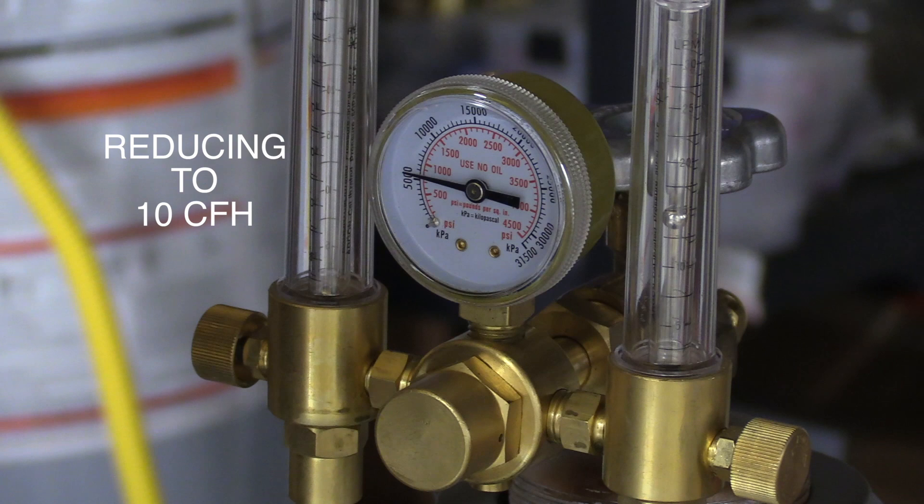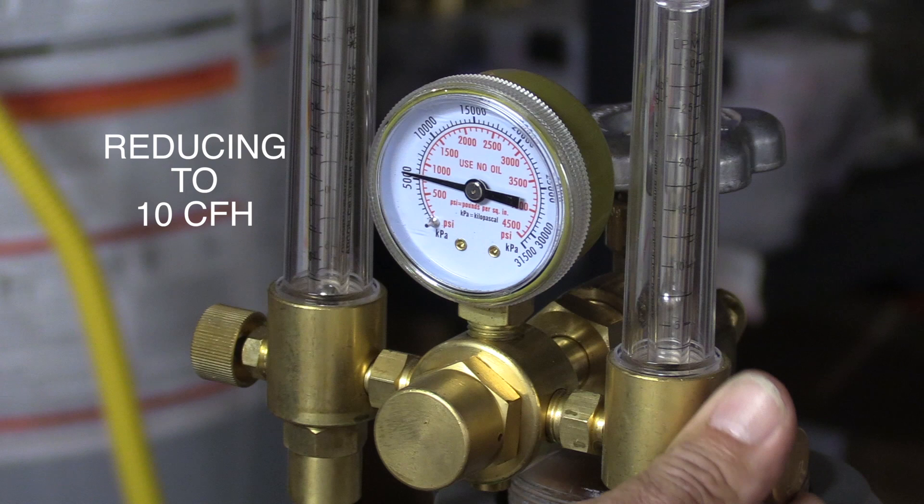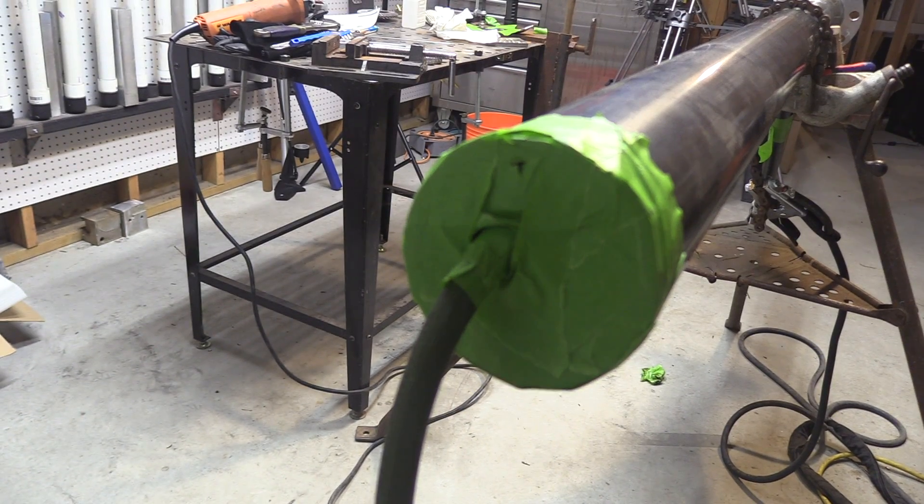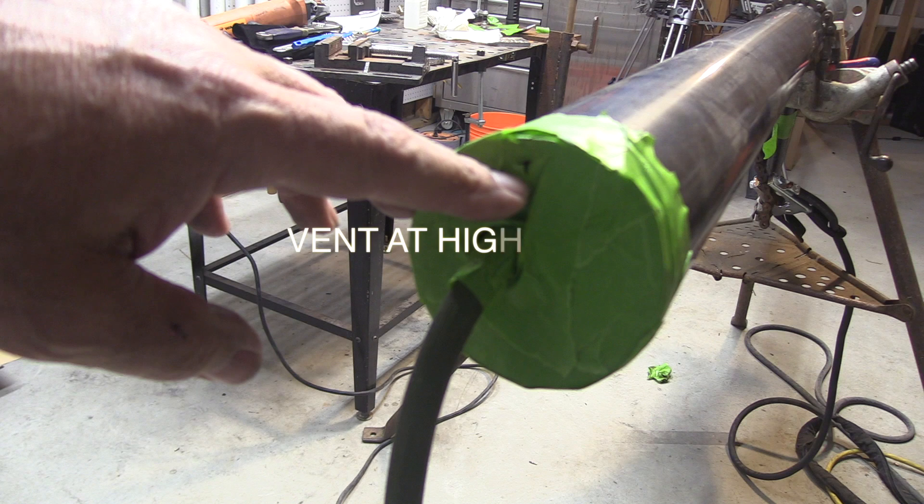Now that I'm ready to close this thing up, this is the last little one-inch section. I'm reducing my flow to about 10 CFH. And I've got to make sure that I have a vent at the uppermost point, and I'll explain that in just a second.